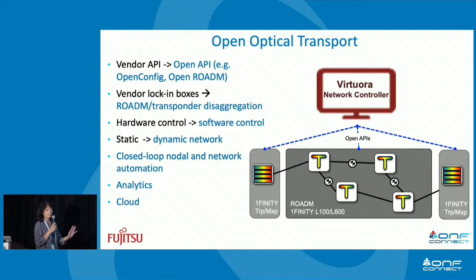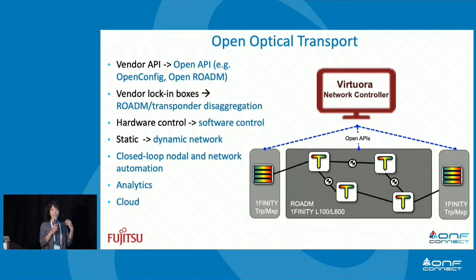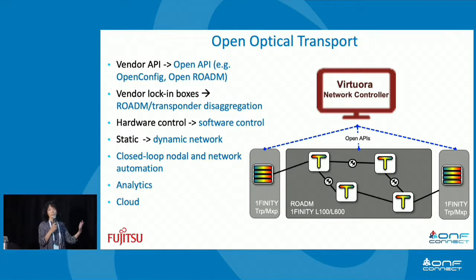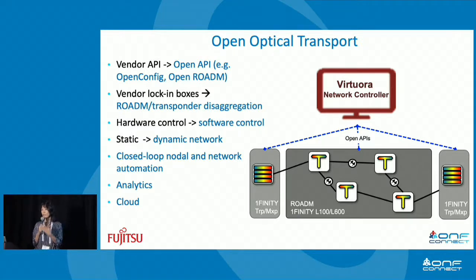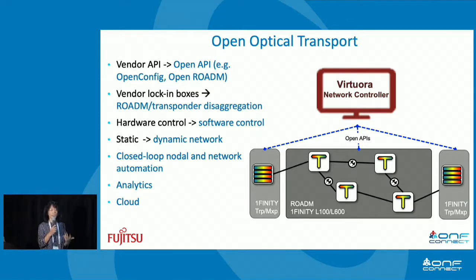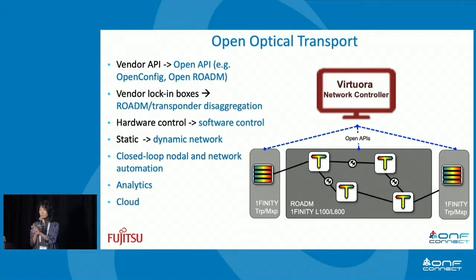We move from vendor-locked boxes to disaggregated boxes. Right now we provide transponders disaggregated from ROADM, and even within ROADM the amplifier can be disaggregated as well. Hardware control is moving to software control — earlier speakers talked a lot about moving control capabilities up to software, even conducting optical line control feedback loops. SDN and disaggregation make it possible to apply these capabilities across multiple vendors.